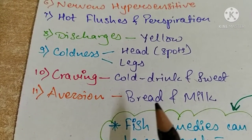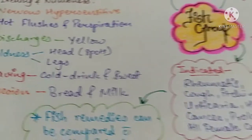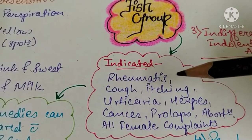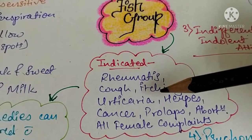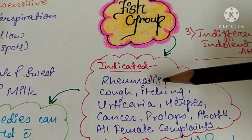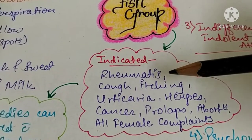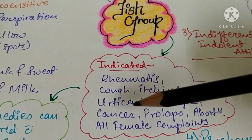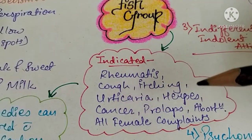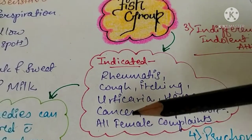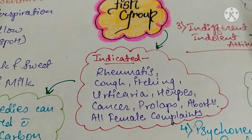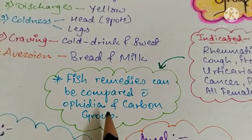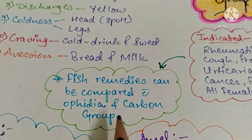There is craving for cold drinks and sweets, and aversion for bread and milk. Common indications include all female complaints, rheumatism related to heart lesions, cough, itching, urticaria, herpes, cancer, prolapse, abortion, and other female complaints. Fish remedies can be compared with the Ophidia and carbon groups.